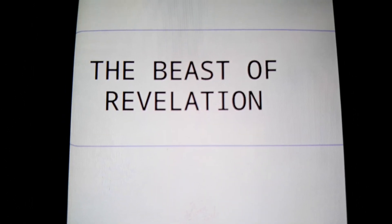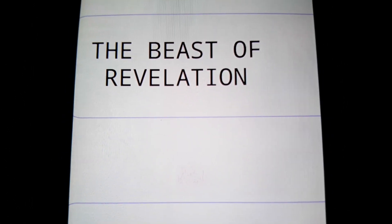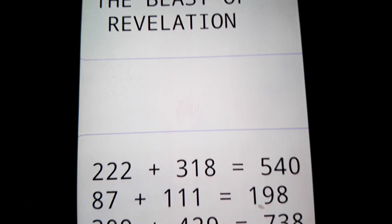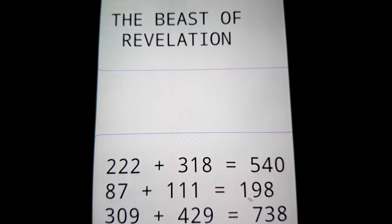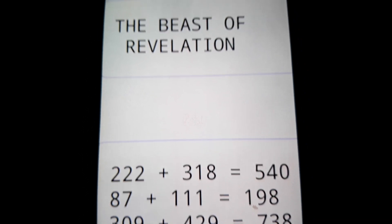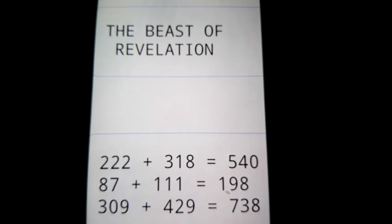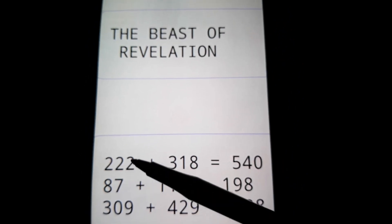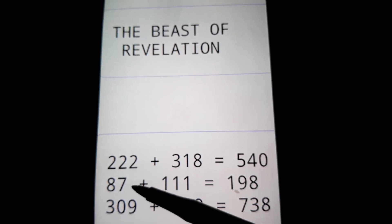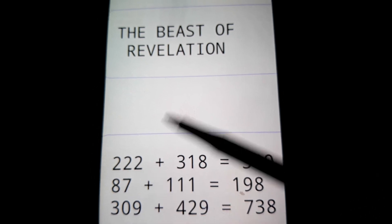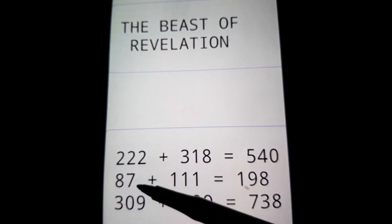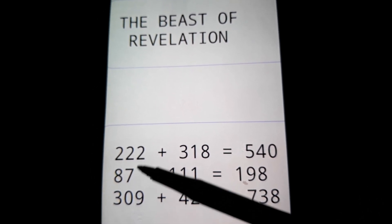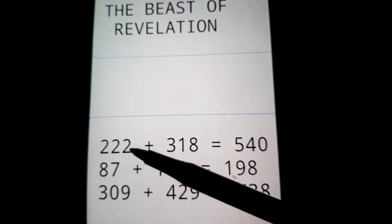Elvis is the antichrist. The Beast of Revelation equals the exact same — just the front numbers — 2-2-2-87 again. And this is the year where Elvis turned 87 in 2022.